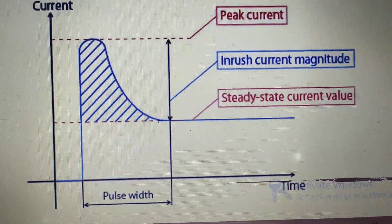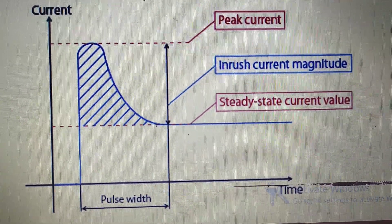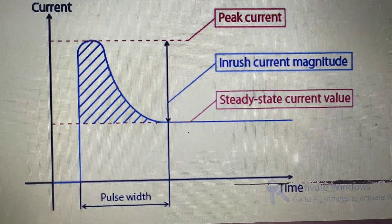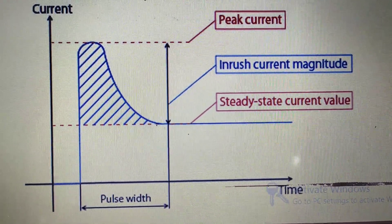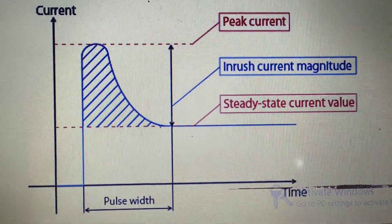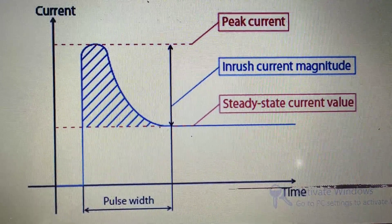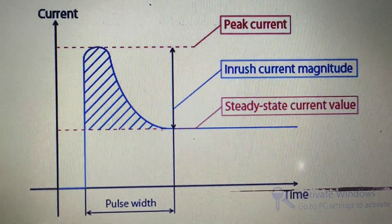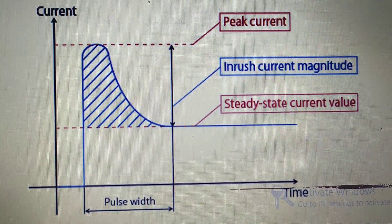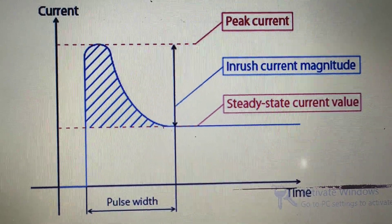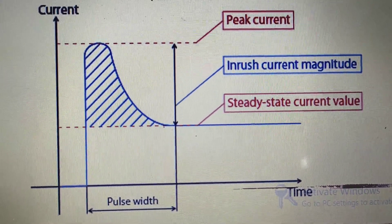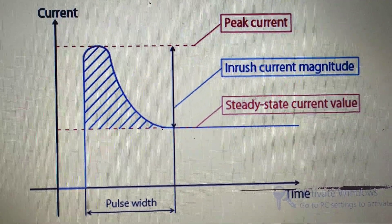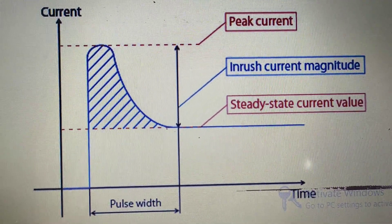When we switch on the supply, the current increases instantly to reach a steady-state value. After reaching the steady-state saturation value, the current returns to the normal current. The peak shown here — indicated by the blue or hashed line — represents the inrush current magnitude.